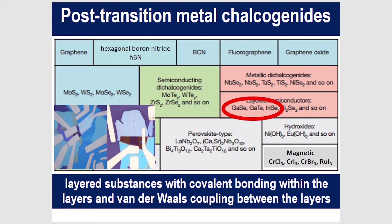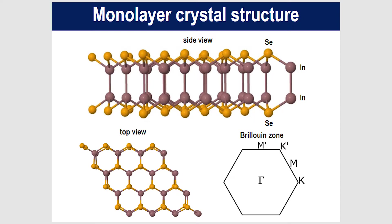When I talk about a monolayer of indium selenide, we're really thinking of four atomic layers strongly covalently bonded: two layers of indium atoms, and then on the outside of those, two layers of selenium. From the top you have the familiar honeycomb lattice, but one sub-lattice has the indium atoms and the other has the selenium atoms.